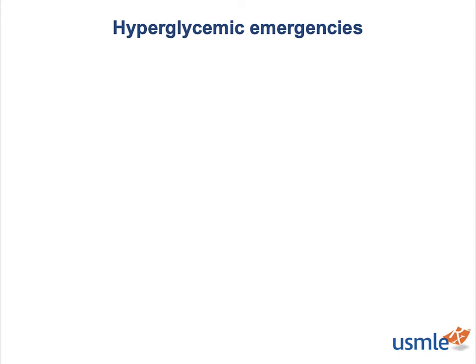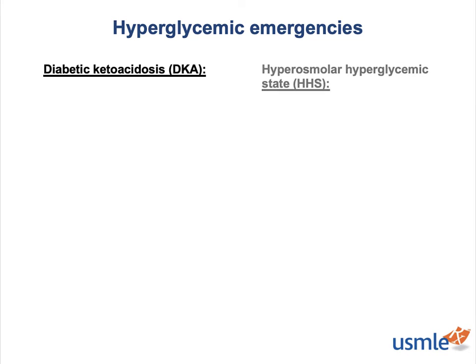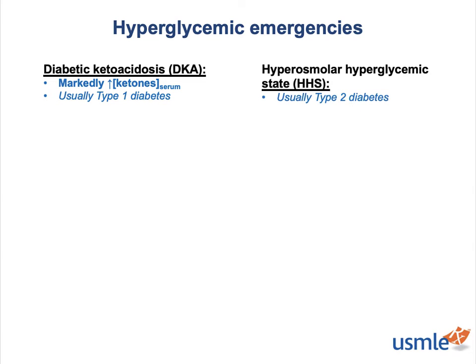There are two major types of hyperglycemic emergency: diabetic ketoacidosis and hyperosmolar hyperglycemic states, otherwise known as DKA and HHS. They both have a lot of overlap in their etiology, pathophysiology, and treatment, but the main distinction is that DKA is characterized by ludicrously high levels of serum ketones, and HHS is not. Unsurprisingly, the hyperglycemic emergencies generally occur in patients with diabetes mellitus, but DKA tends to occur in patients with type 1 diabetes, whereas HHS tends to occur in patients with type 2 diabetes.